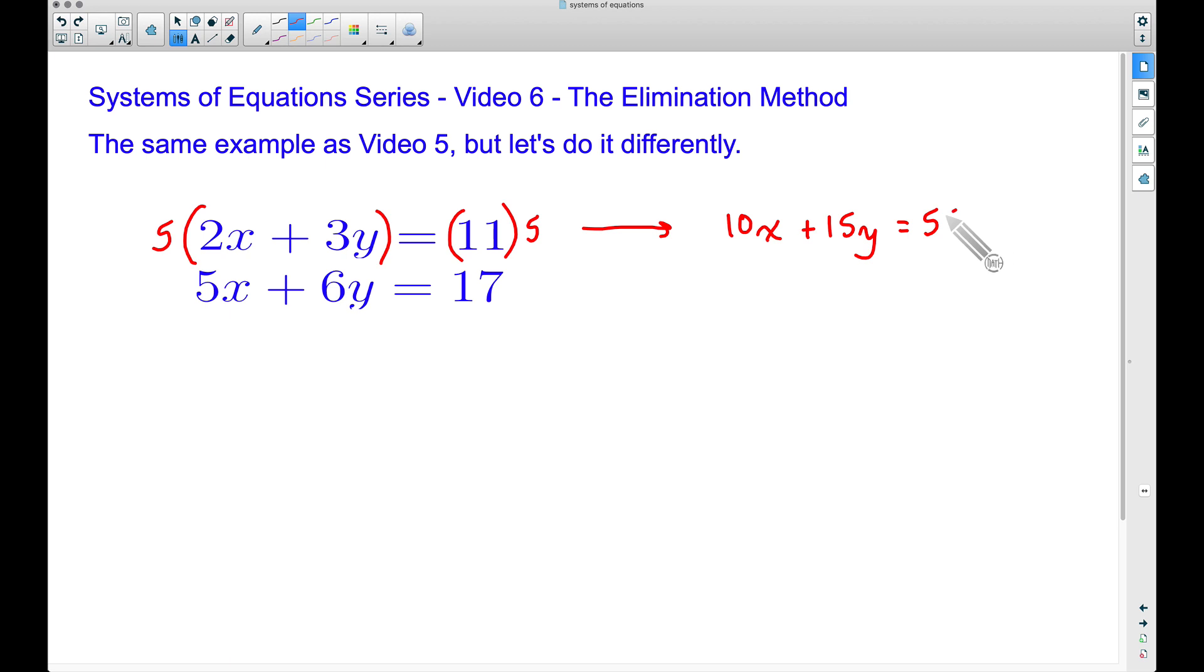And now let's take the second equation and let's multiply it by a negative 2. Now you may wonder why are we doing a negative 2. Well go ahead and check this out. Negative 2 times 5x is negative 10x. These are going to get eliminated right here in a moment.